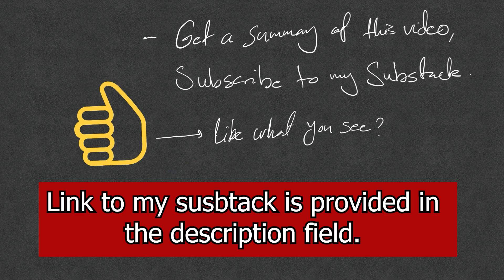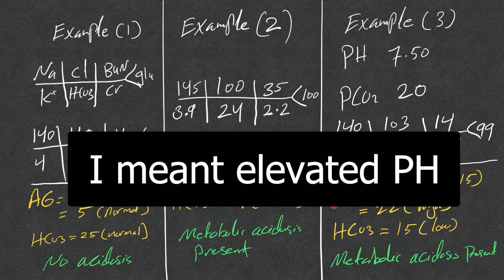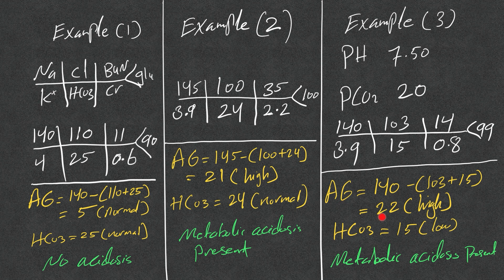Let's go through examples. Example 3: pH 7.50 — alkalotic, explained by the low PCO2. Despite the normal pH, we always calculate the anion gap. The anion gap here is 22 — high — and bicarb is 15 — low. So metabolic acidosis is present despite a high pH. Normal or high pH does not rule out metabolic acidosis.